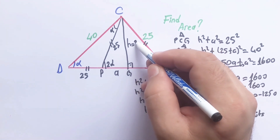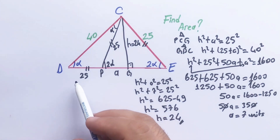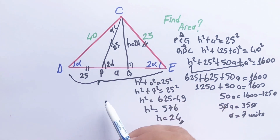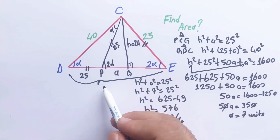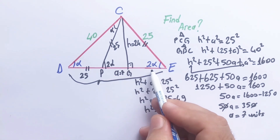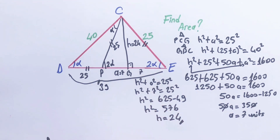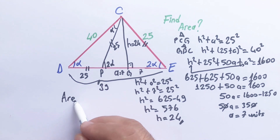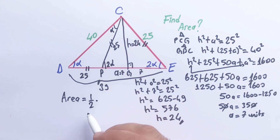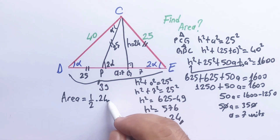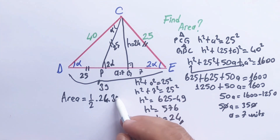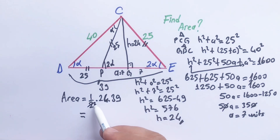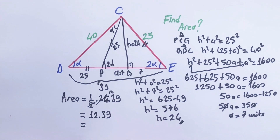Now we can calculate the area very easily. This side a is 7 units and this length is also 7, therefore the base is 39 units. The area will be equal to one half times height 24 times base 39. Therefore the area will be equal to 12 times 39, so the area is going to be 468 square units.